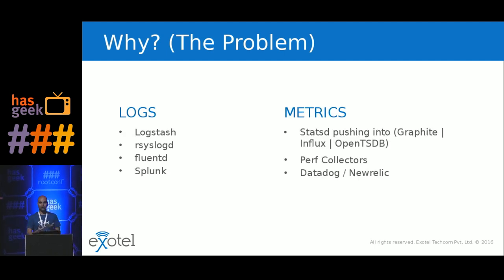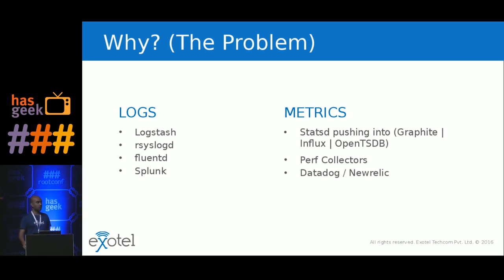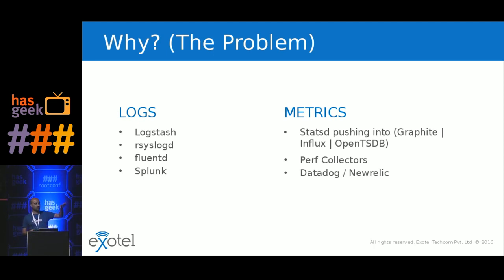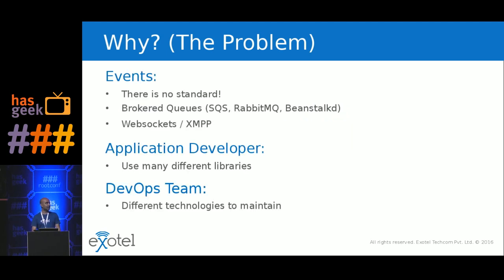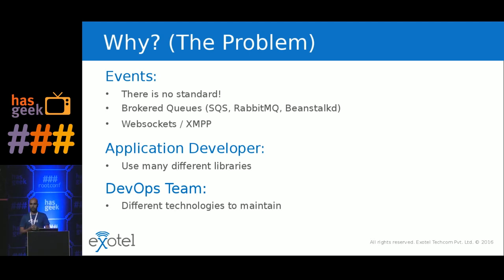For logs, you would typically use Logstash, rsyslogd, fluentd, and some folks use Splunk. For metrics, you would use statsd with whatever backend, or perf collectors sitting on respective machines pushing to a central server — and the rich folks use Datadog or New Relic. And the worst thing is events, because for events there is no standard. Different companies do differently, and even different teams within the same company do differently. Typical approaches include a brokered queue such as SQS or Beanstalk, WebSockets, XMPP, and various frameworks that have been built.